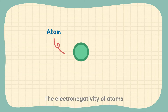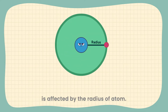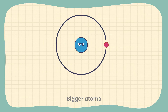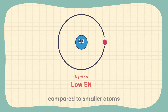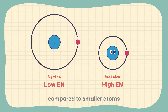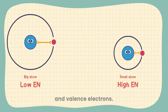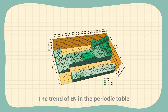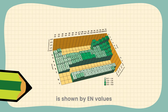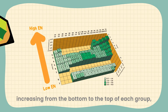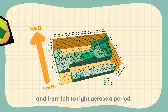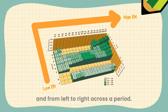The electronegativity of atoms is affected by the radius of atoms. Bigger atoms will have lower EN compared to smaller atoms, due to the greater distance between the nucleus and valence electrons. The trend of EN in the periodic table shows EN values increasing from the bottom to the top of each group, and from left to right across a period.